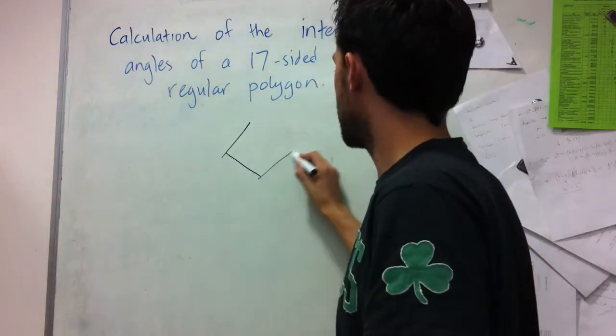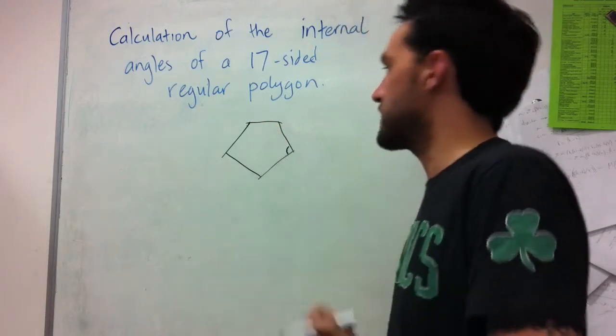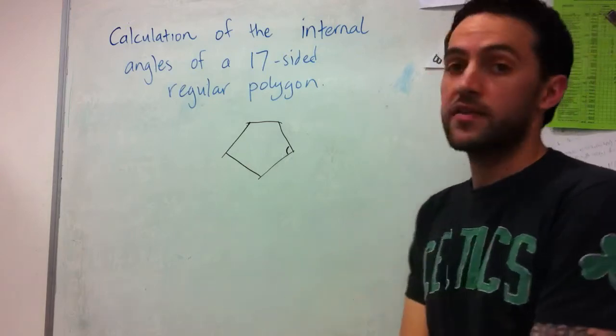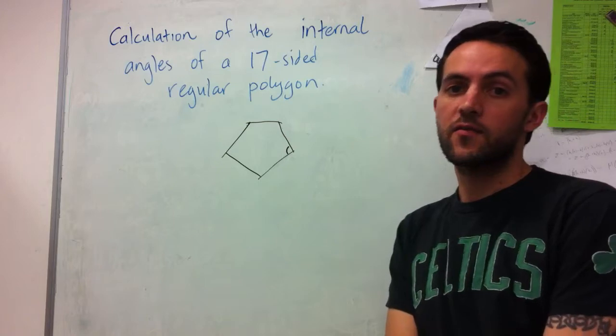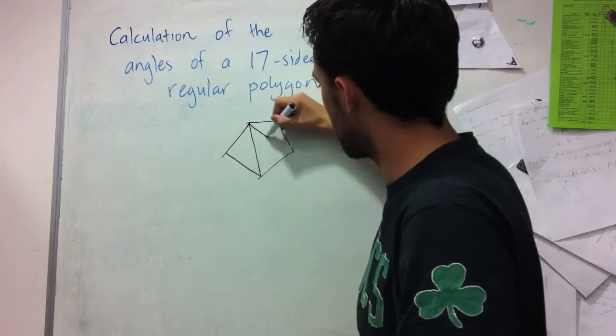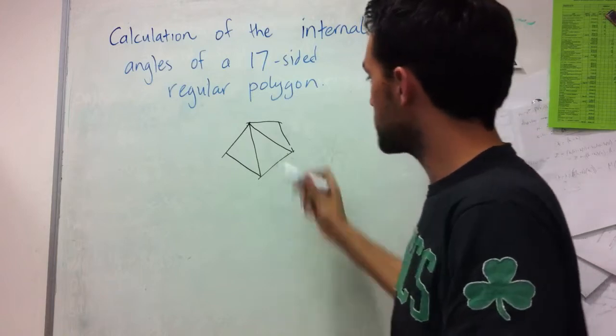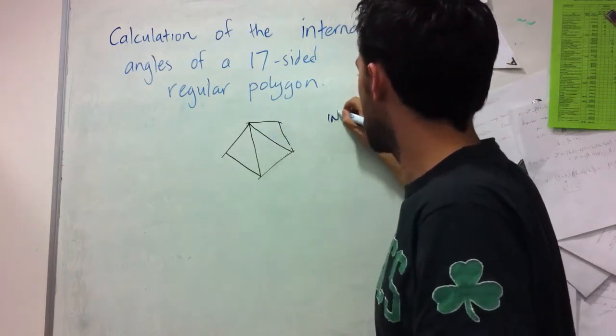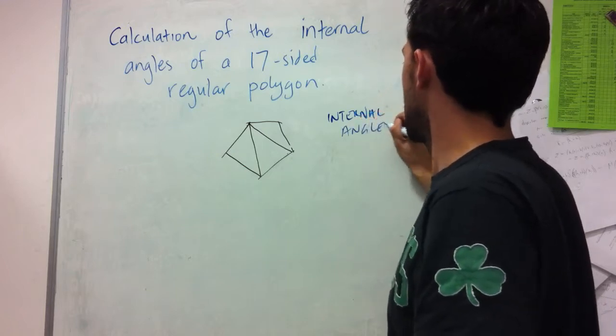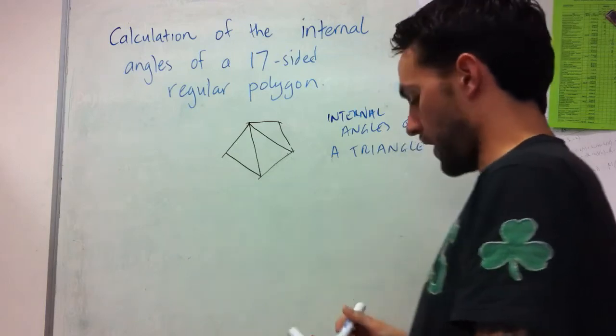By the internal angle I mean, for example, for this pentagon we want to know what each of these internal angles are. Probably the simplest method conceptually is to think of breaking the polygons up into smaller triangles. If I break this pentagon into three triangles, I use the fact that the internal angles of a triangle always sum to 180 degrees.